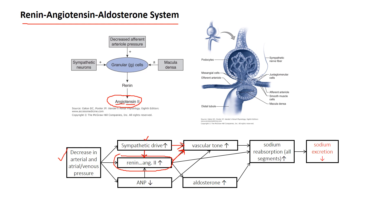Constriction of vessels in the kidneys leads to less filtration, and that is ultimately less urine production. Angiotensin 2 also tells the kidney to reabsorb more sodium and more water during urine formation, leading to retention of more sodium and more volume. It also stimulates aldosterone production, which also has the effect of telling the kidneys to retain salt and water. So all of these things — sympathetic drive, vessel tone, volume retention — all lead to an increase in pressure in response to decreased pressure.